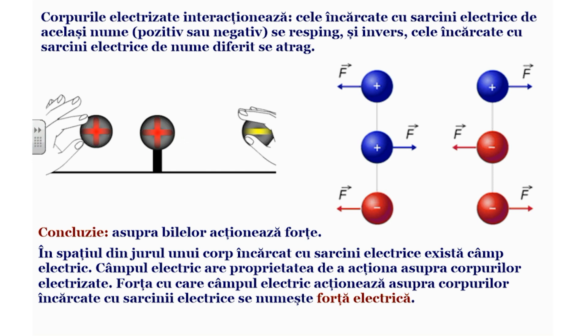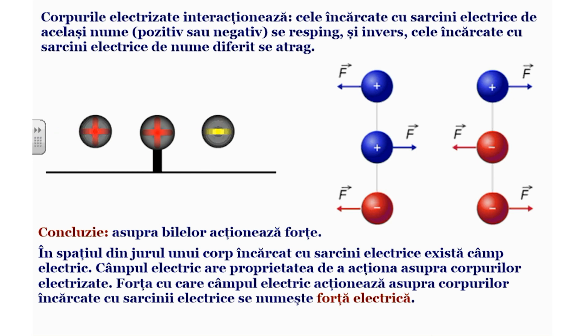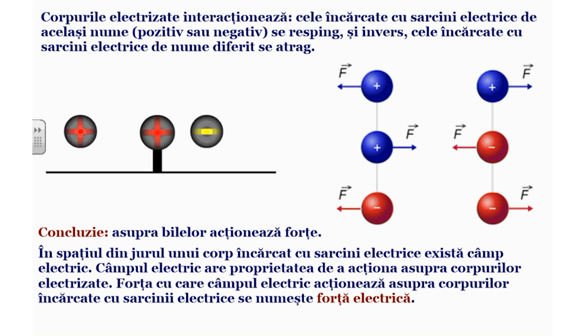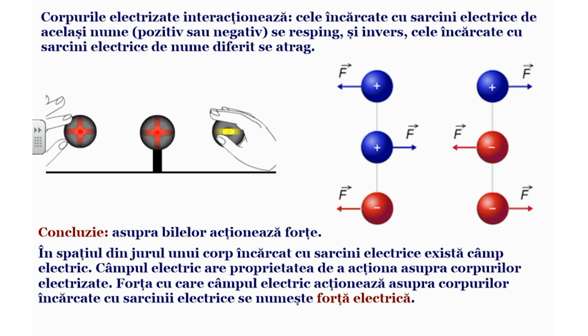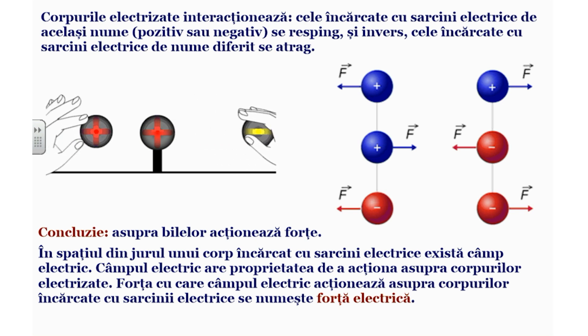Că asupra bililor care interacționează acționează forțe, și că în spațiul în jurul unui corp încărcat electric există câmp electric. Câmpul electric are proprietatea de a acționa cu forțe electrice asupra sarcinilor electrice, iar forța cu care câmpul electric acționează asupra sarcinilor electrice se numește forță electrică.